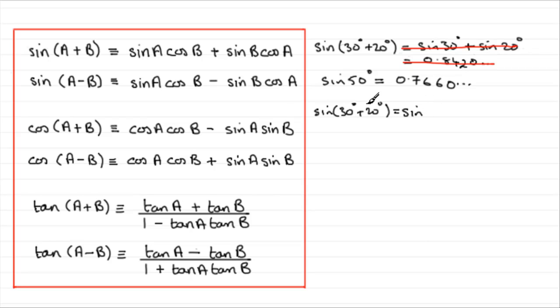So it would be sine 30 degrees times cosine of B, cosine of 20 degrees. And according to the formula, we have plus sine B, cosine A, so that would be plus the sine of B, B being the 20 degrees, times the cosine of A, A being the 30 degrees.